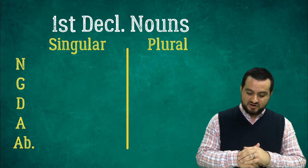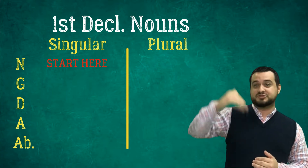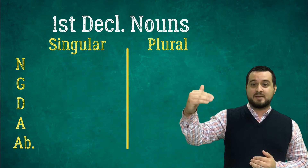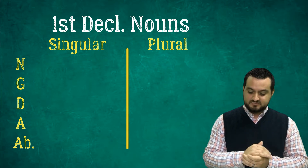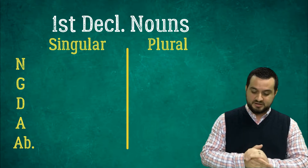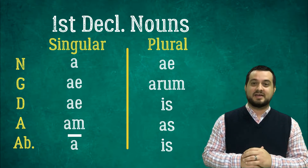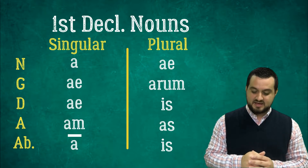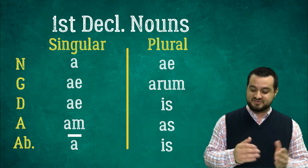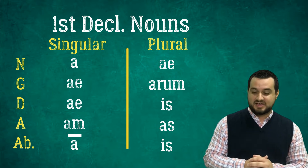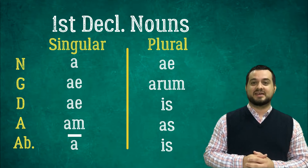So let's start in order, starting with nominative singular, working our way down all the way to ablative, and then we'll jump over to nominative plural and work our way down as well. Here are the endings. On the count of three — one, two, three. A, A, Am, A. A, Arum, Is, Os, Is.